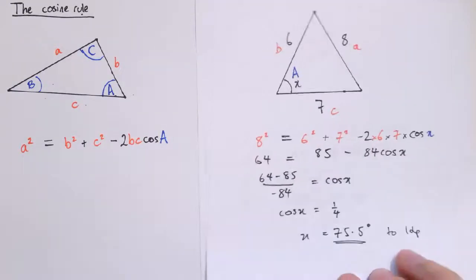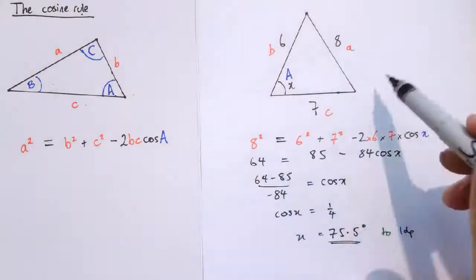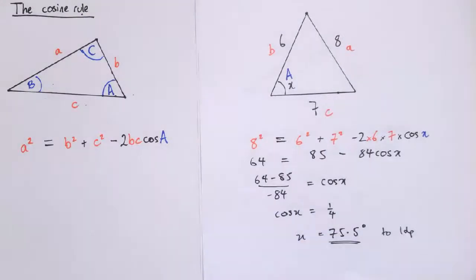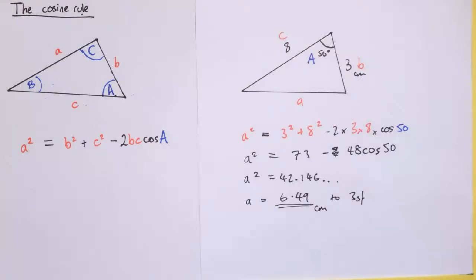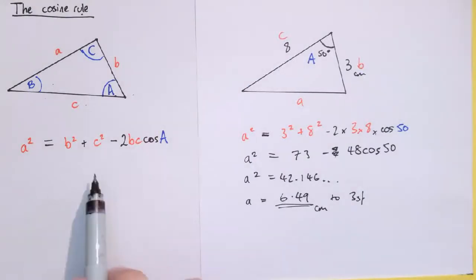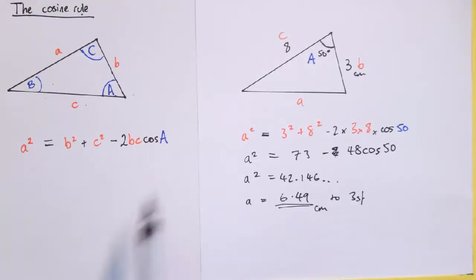So we've got two cases where the cosine rule is quite useful: the first where we've got all three sides known and one angle missing, and the second where we've got two sides and the included angle and we want to find the other side. You could in theory use the cosine rule in other cases but it can be more complicated. In some cases where we're looking for other angles, we'll be using another rule — the sine rule — so check out the video for that one too.